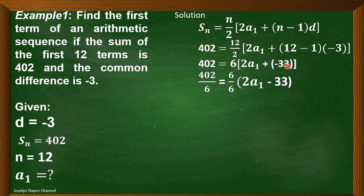So, 402 divided by 6. Then, we'll just copy this one. 6 times 2a sub 1. Then, plus negative 33. So, this will become minus 33. And then, we have here 6.